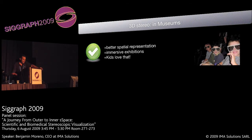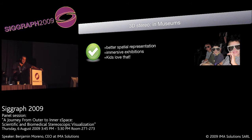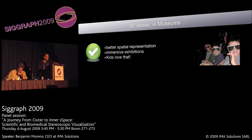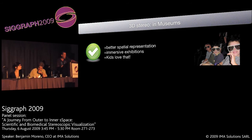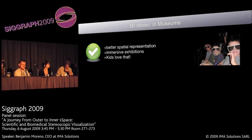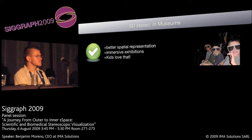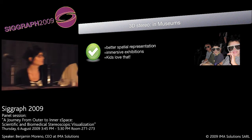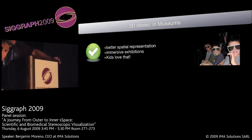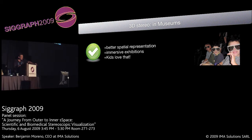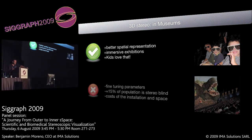For exhibition, we can also use 3D stereoscopy, as that's what we are doing. And of course you will have a better spatial representation of complex shapes and anatomy to create immersive exhibitions. In general, kids really love this kind of events, so that's a good way for museums to make people come.